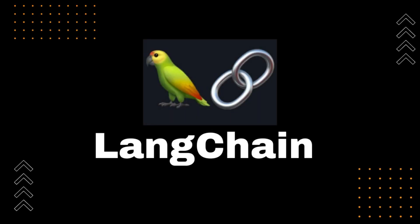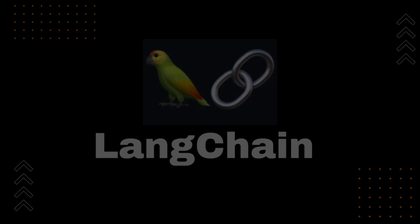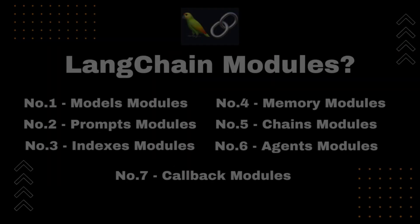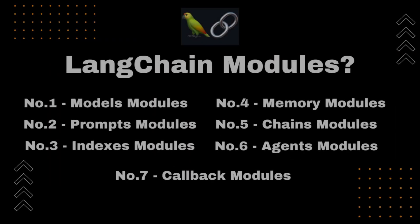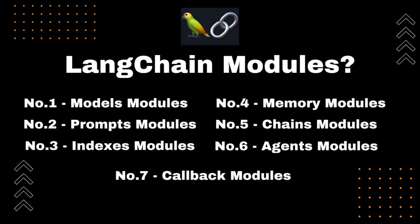LangChain modules. LangChain provides some core modules as building blocks for any LLM-powered application. Number 1: Models Module. The Models module provides a generic interface for interacting with LLMs. It also provides a variety of tools for working with LLMs, such as prompt management and prompt optimization.